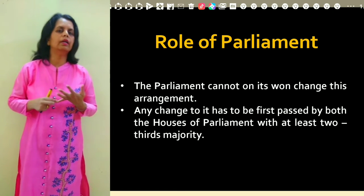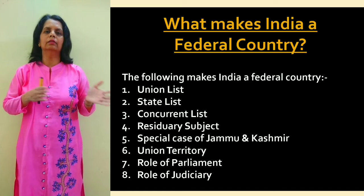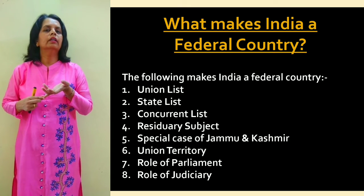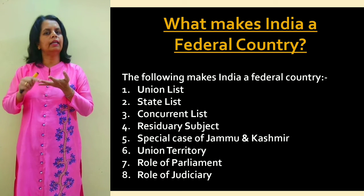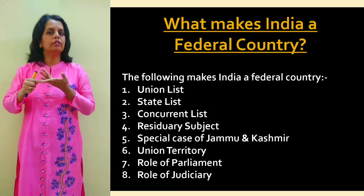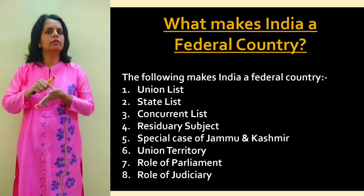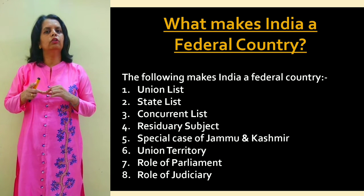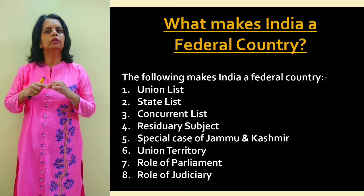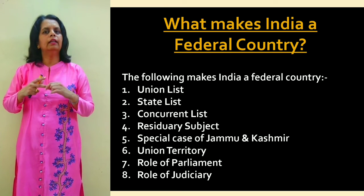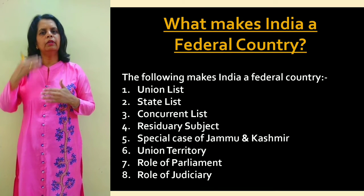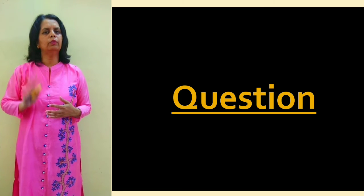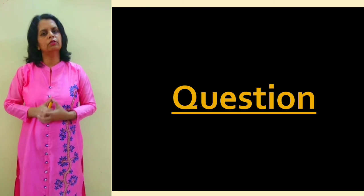To summarize what makes India a federal country: mention the Union List, State List, Concurrent List, residuary subjects, special provisions given to certain states like Jammu and Kashmir, union territories, amendments or changes to be passed in the constitution requiring both levels of government, and the role of the judiciary. All these seven to eight points need to be written. This is usually a five-mark question.